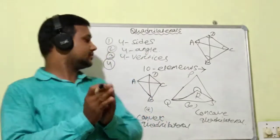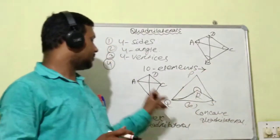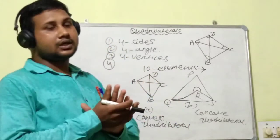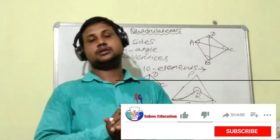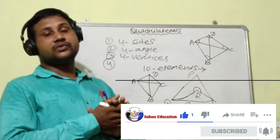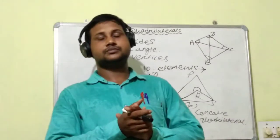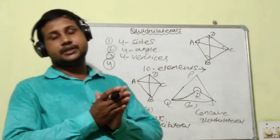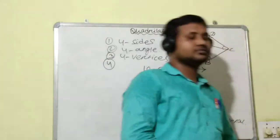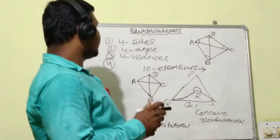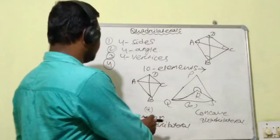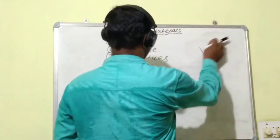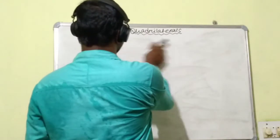We are not learning about the concave quadrilateral at all. We are learning about the convex quadrilateral. Next, we will discuss the types of quadrilateral. You all know quadrilaterals are of different types like parallelogram, rectangle, rhombus, square, kite, and trapezium. We will recall their properties here.